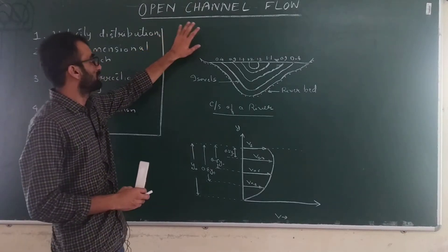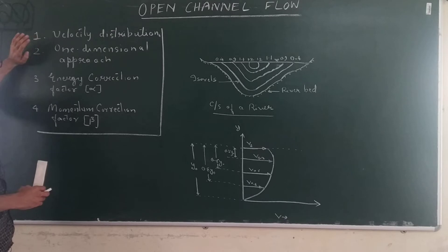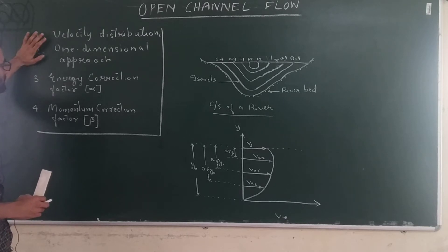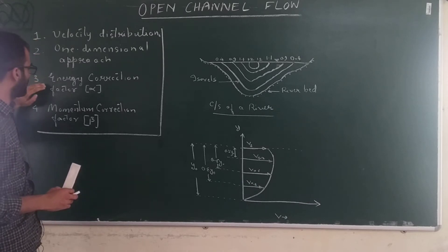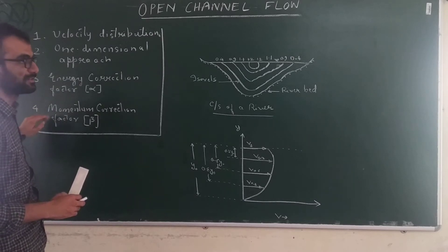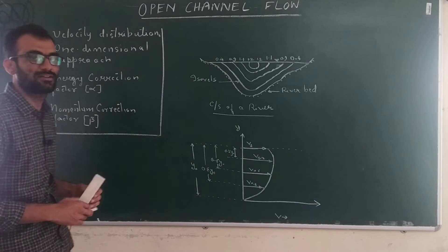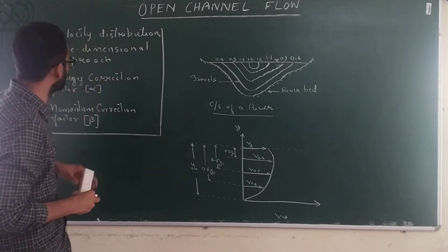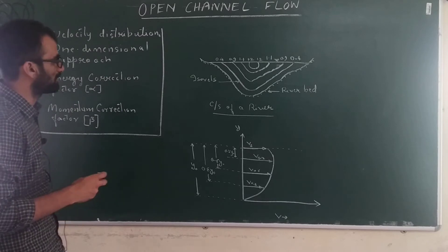In today's lecture, we are going to discuss four things: first, velocity distribution in open channel; second, the one-dimensional approach; third, the energy correction factor alpha and momentum correction factor beta. So these are the four topics we will discuss today. Let's start with velocity distribution.